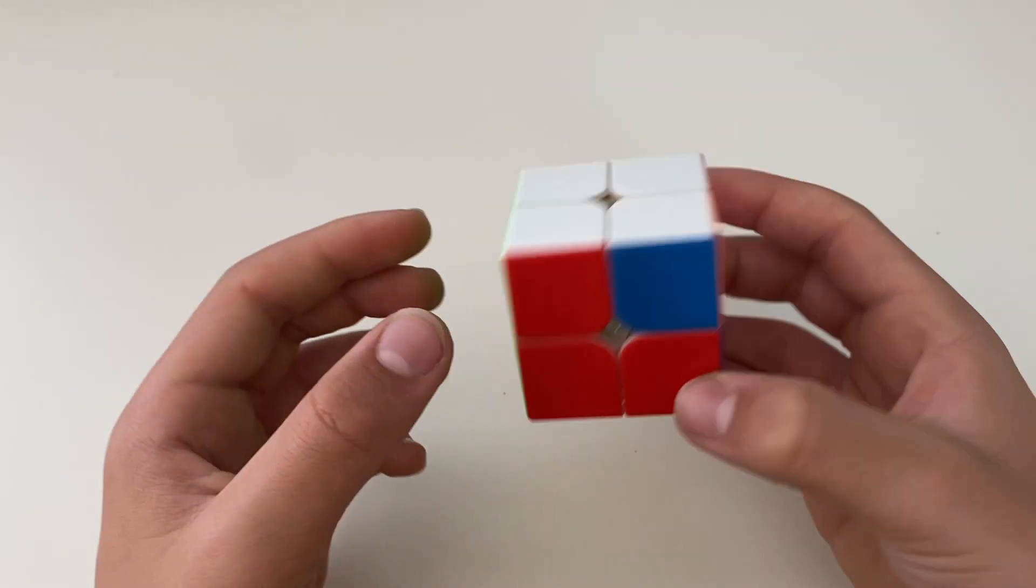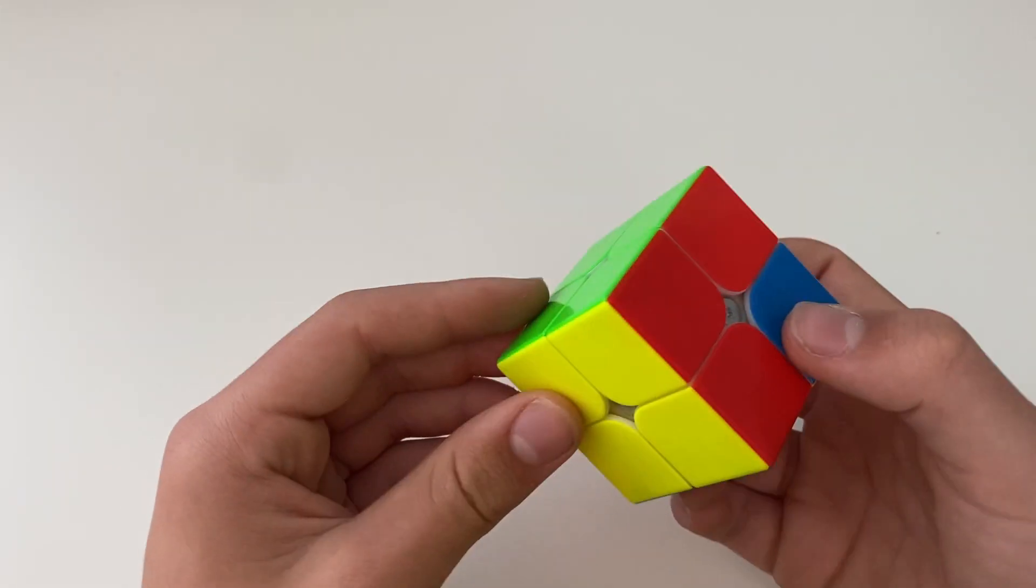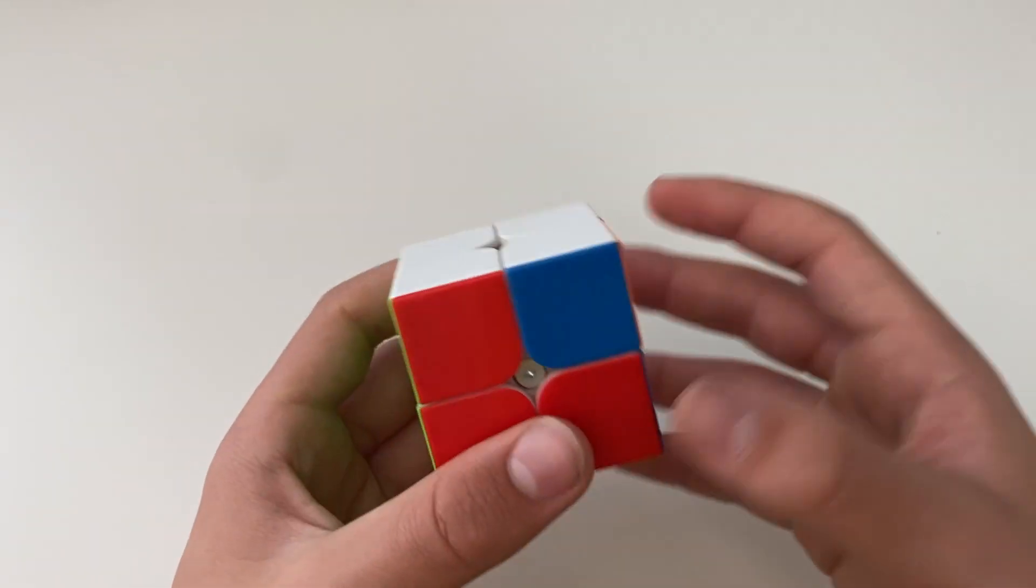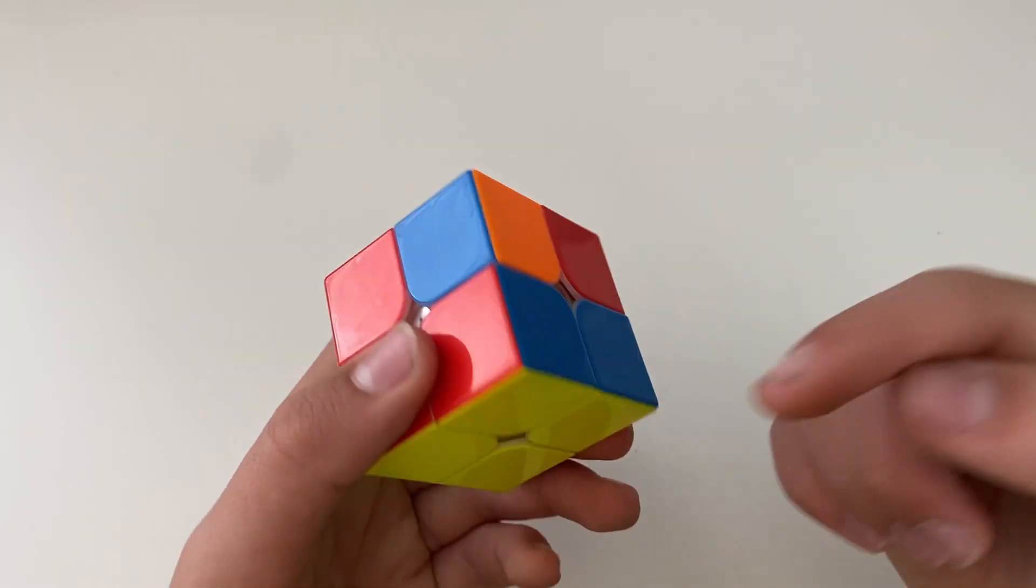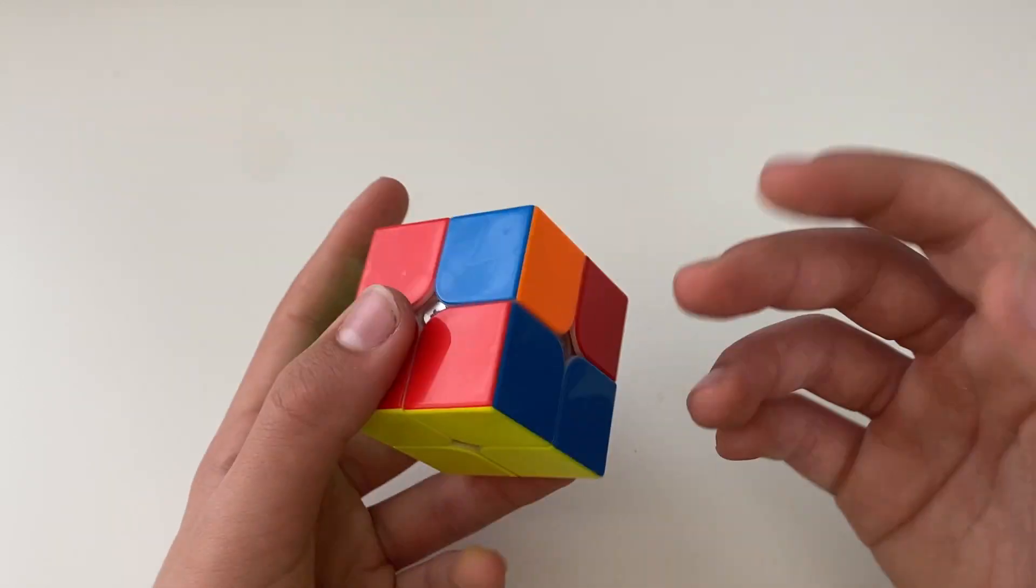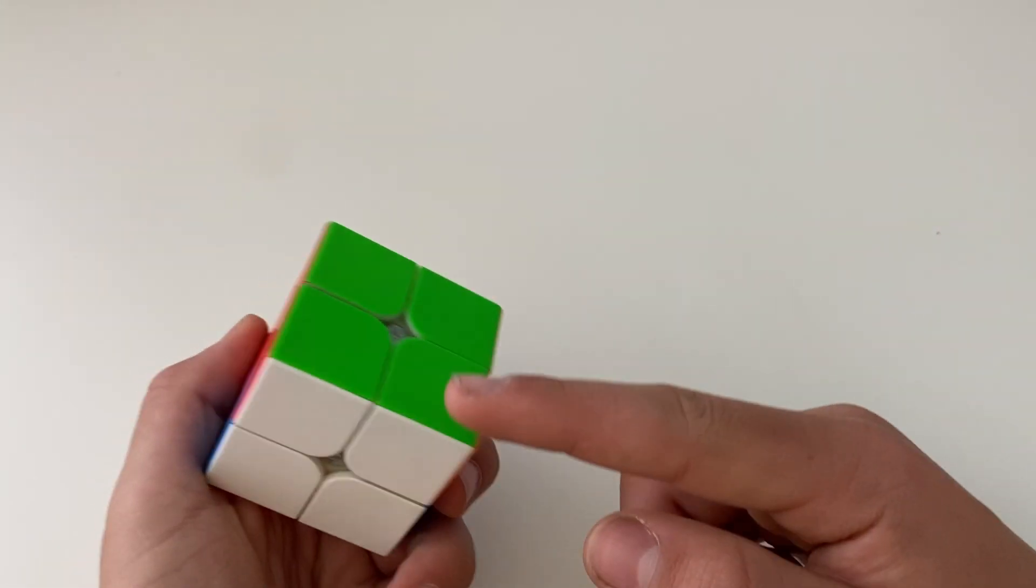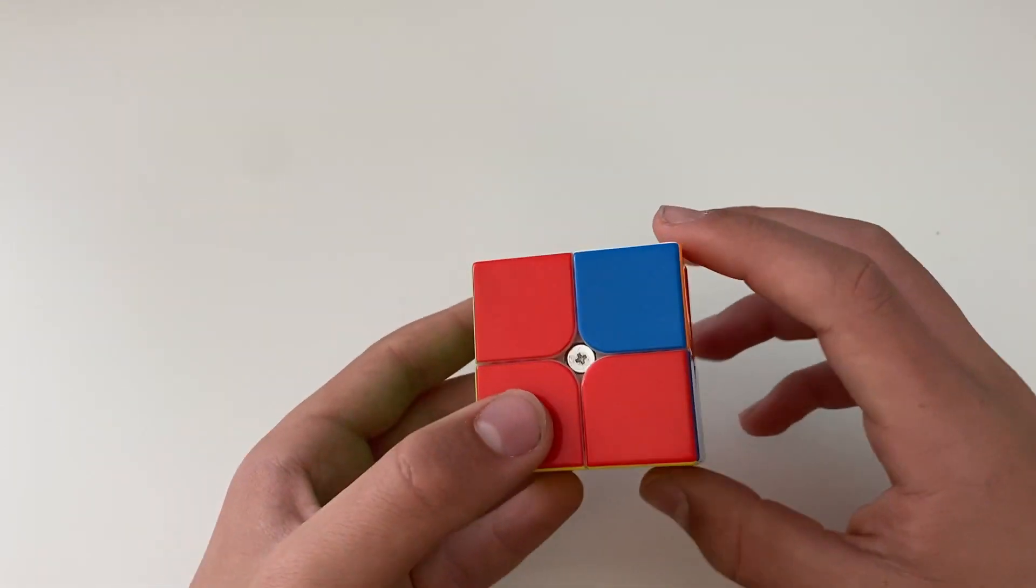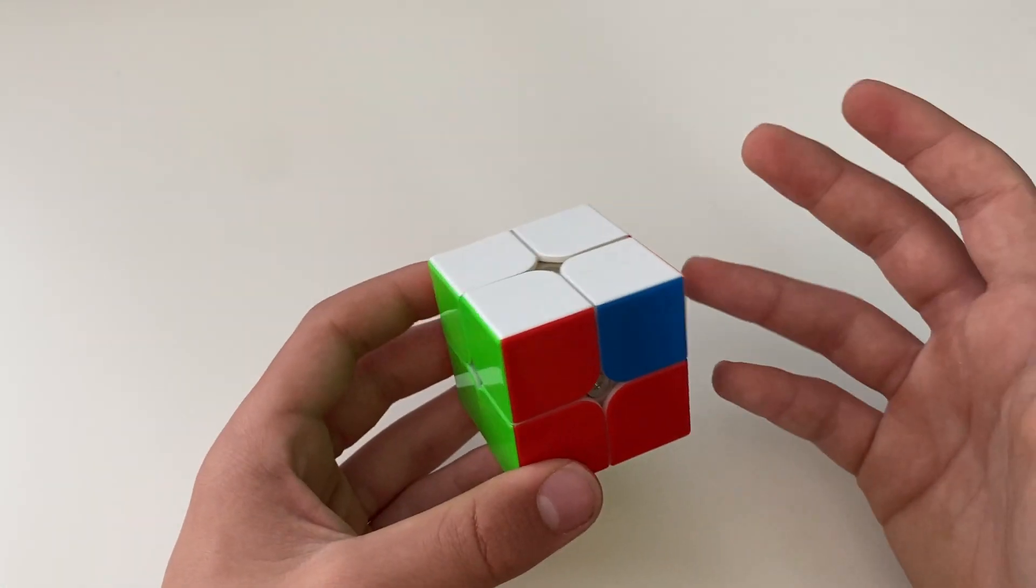The next case I have is when we have one bar on top and the whole bottom side is completely solved, or vice versa, where the top is completely solved and the bottom only has one side. So if the bottom only has one side like this, if the bottom only has one bar, you can just do a cube rotation. And we're going to do this algorithm. So it's a bit longer than the other ones I've already showed, but it's still pretty easy to memorize.